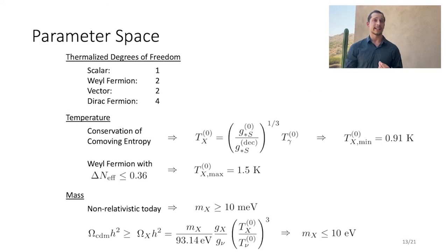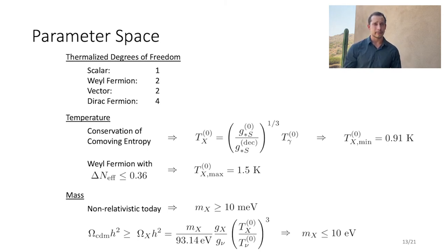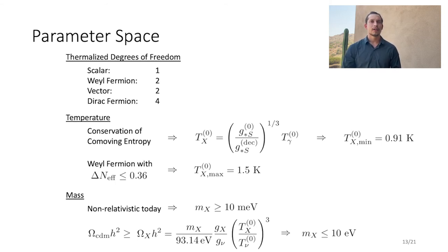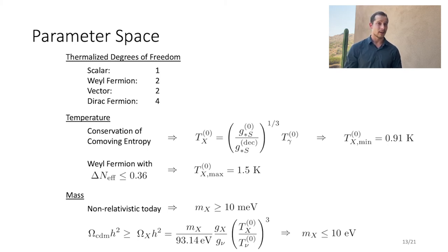Recall that the parameters defining a LEMUR are its mass, temperature, and thermalized degrees of freedom. To study this parameter space efficiently, we limit it to a region of interest. Since only degrees of freedom that thermalize with the standard model will modify our cosmology, we only care about Weyl fermions with two thermalized degrees of freedom, Dirac fermions with four, scalars with one, and vectors with two. Conservation of co-moving entropy allows us to calculate the temperature of a species today as a function of when it decoupled. For a minimal extension to the standard model, the lowest temperature we can yield for a relic today is 0.91 Kelvin. Using the Planck constraint on N_eff, the hottest temperature a Weyl fermion can have today while satisfying that bound is 1.5 Kelvin.